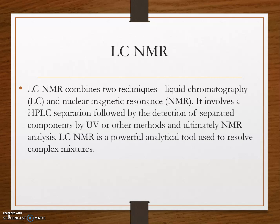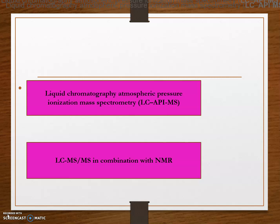LC-NMR combines liquid chromatography with nuclear magnetic resonance spectroscopy. It is a powerful analytical tool used to resolve complex mixtures, introduced in the 1980s and gaining attention for phytochemical analysis in the 1990s. LC-NMR is used for analyzing complex natural products from mixtures and bioactive extracts. Other hyphenated techniques include liquid chromatography–atmospheric pressure ionization mass spectrometry, and LC-MS in combination with NMR.